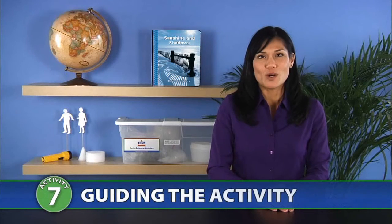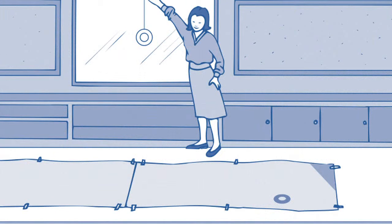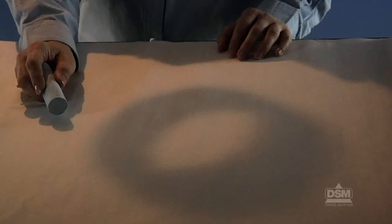To begin Session 1, gather students around the designated window. Make sure they stand back far enough to not block the sunlight coming through. Tape the string holding the foam ring to the top of the window so that the ring is suspended in the middle of the window and its shadow falls onto the floor, and point out the shadow to the class.